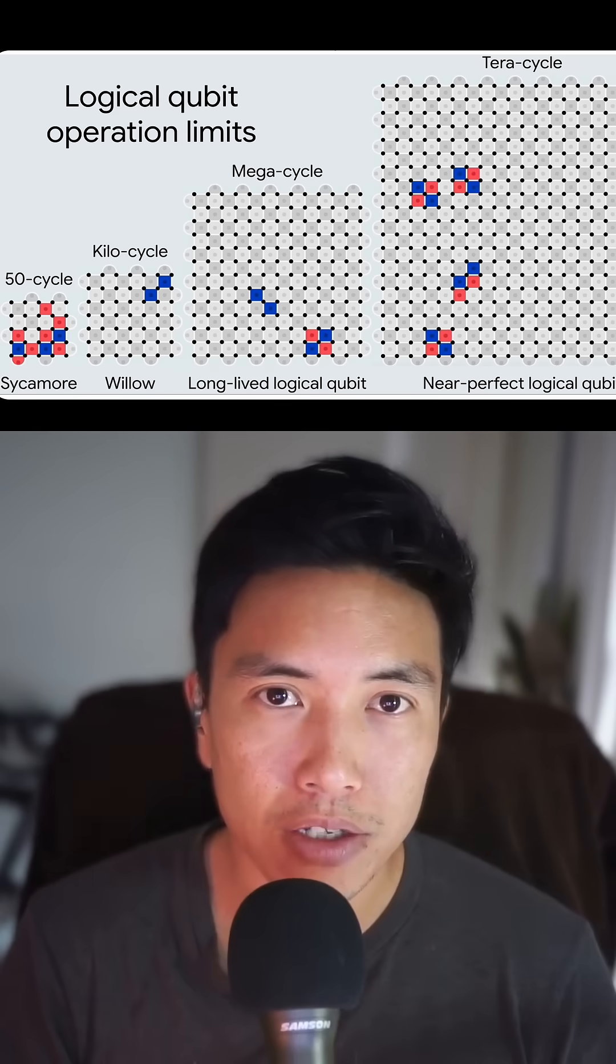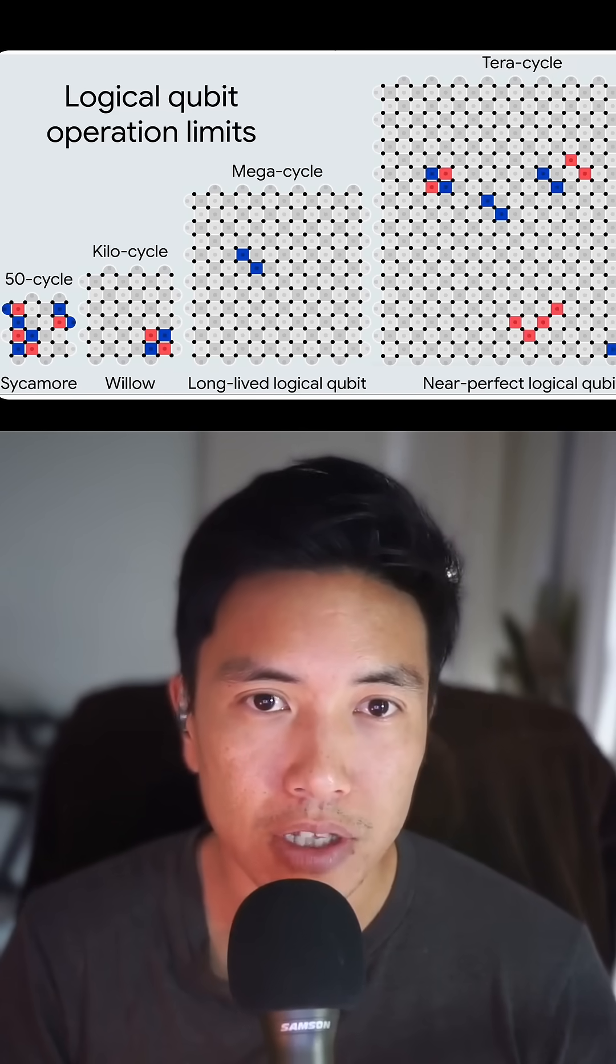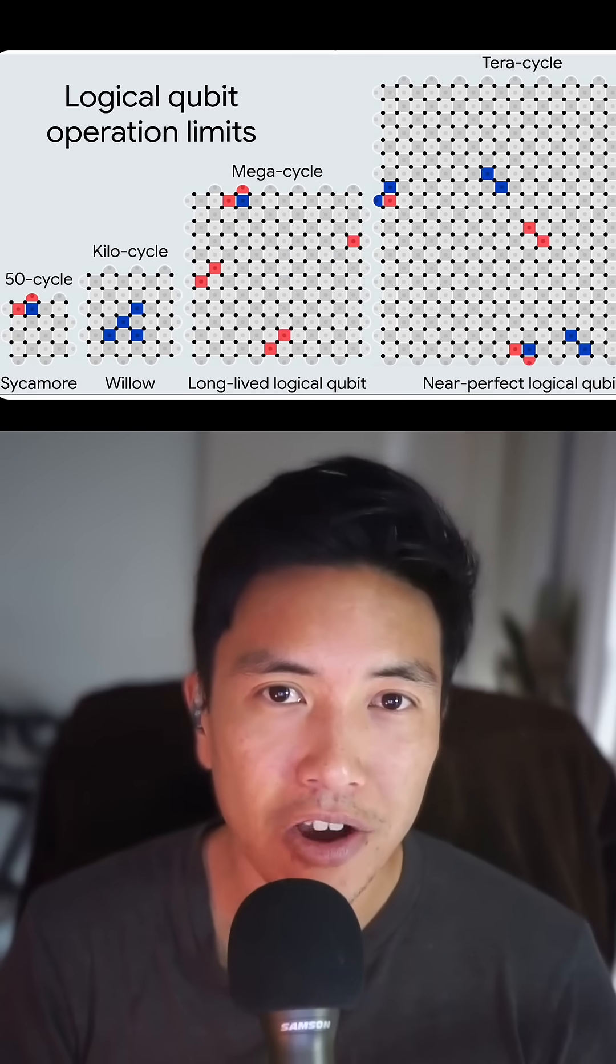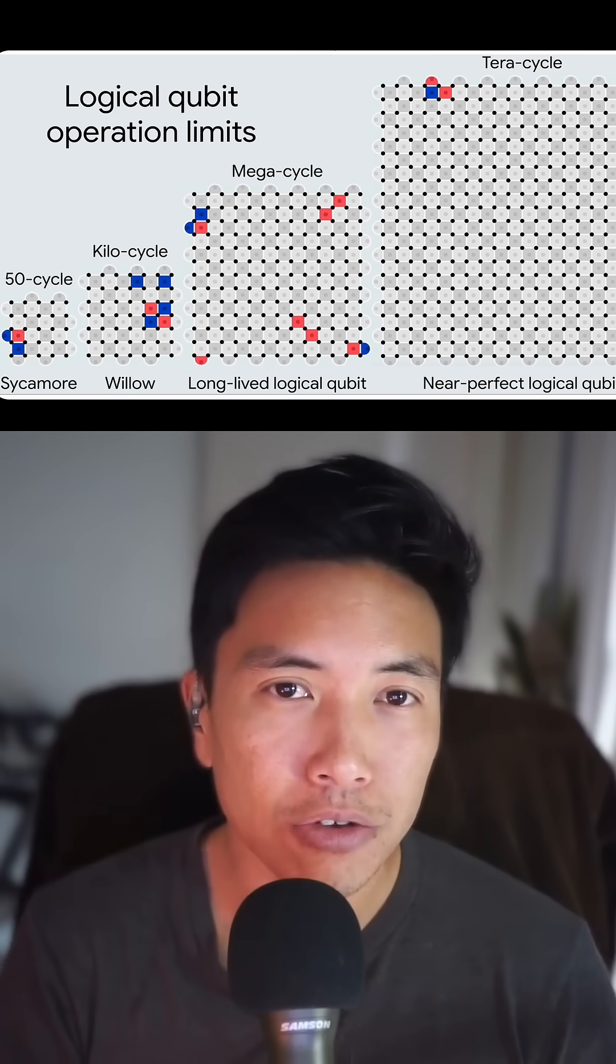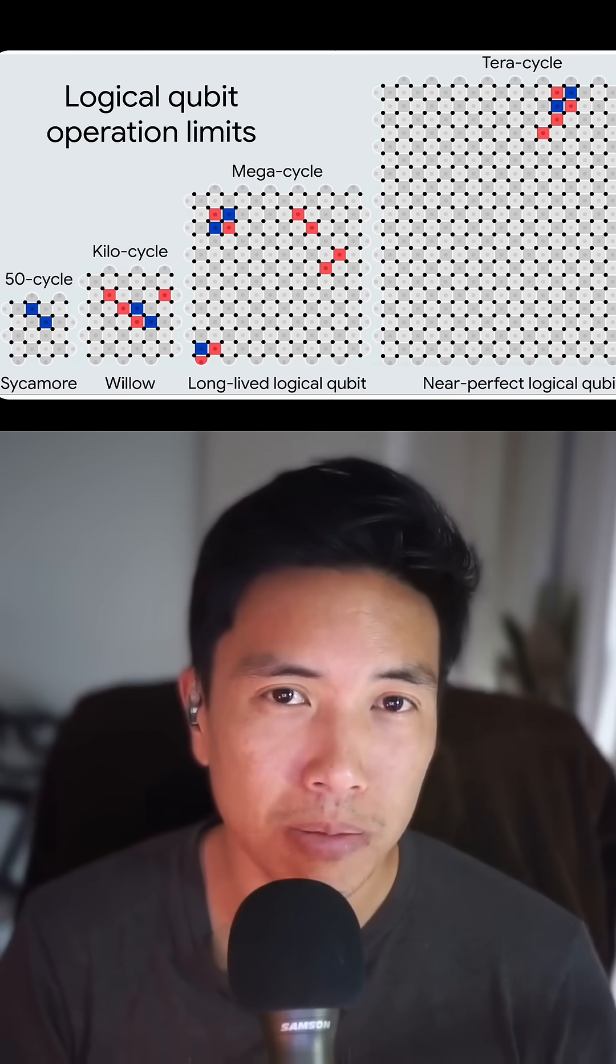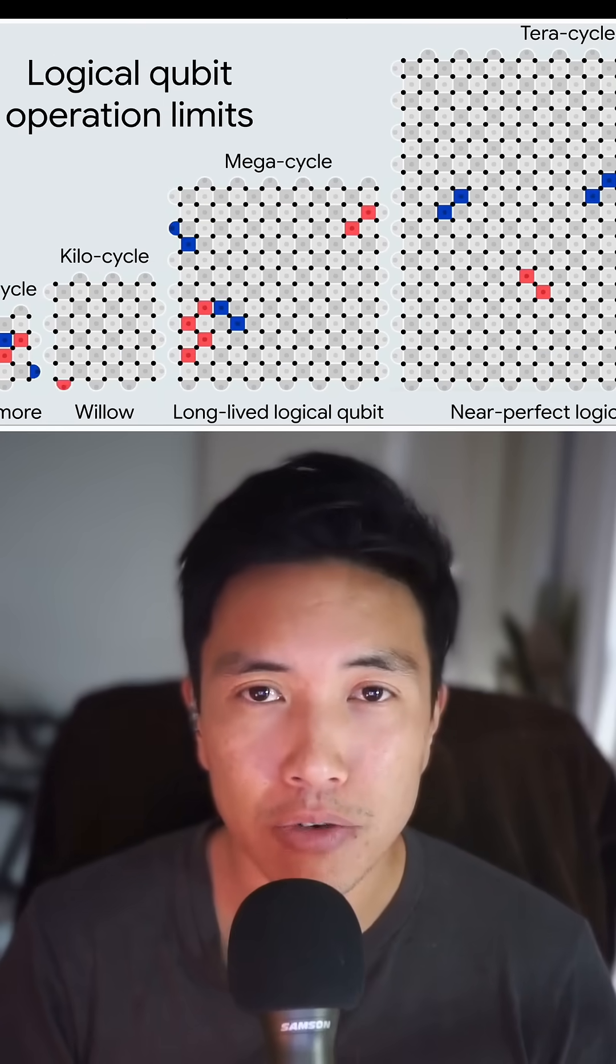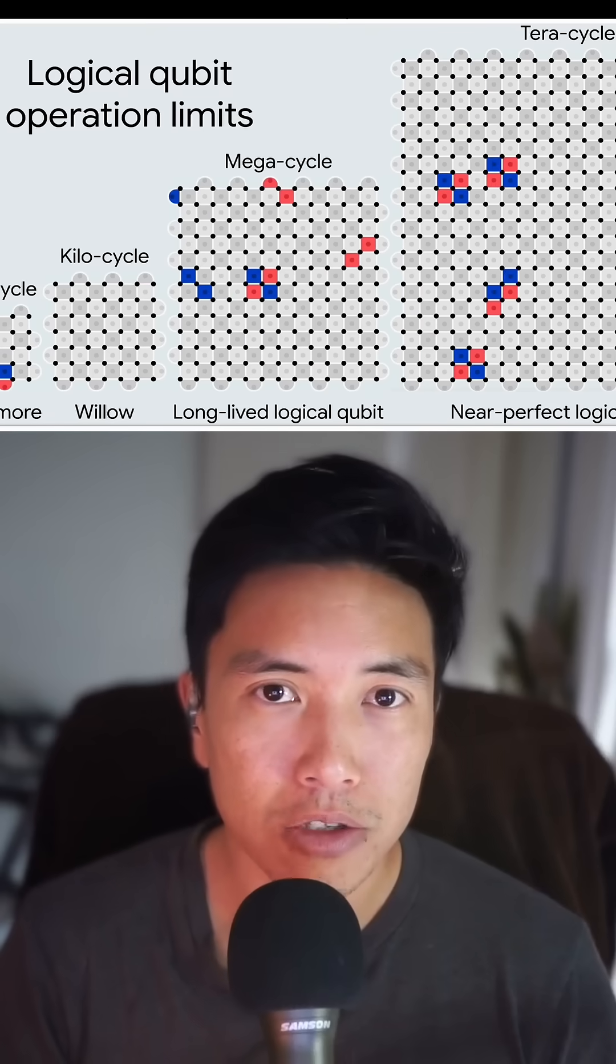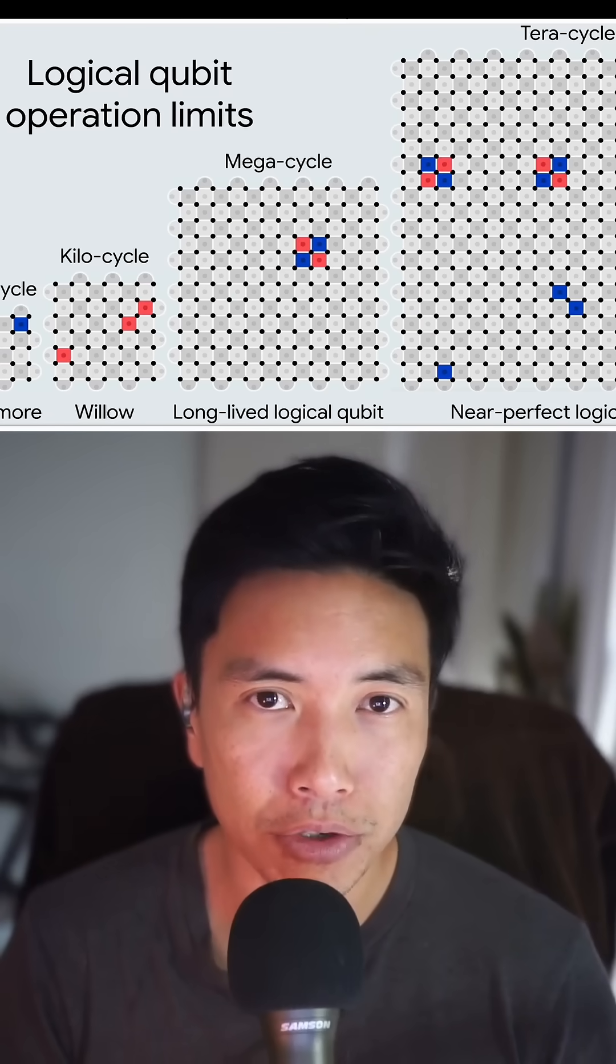So what's interesting about Willow now is that because it's been able to demonstrate this phenomenon of increased and better performing error checking as the size of the grid goes up, it also means that you can now scale quantum chips as well. That's really incredible. You can now scale the size of these quantum chips to produce more powerful computers in the future.